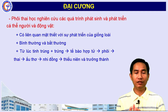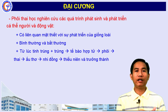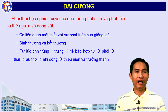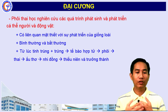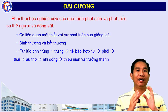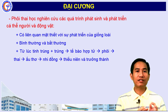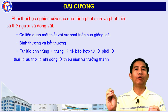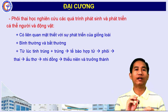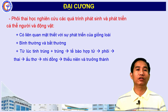Trứng và tinh trùng kết hợp với nhau là hiện tượng thụ tinh. Khi thụ tinh tạo thành hợp tử, hợp tử phát triển thành phôi, phôi phát triển thành thai, đến khi sinh em bé ra rồi em bé tiếp tục phát triển thời thơ ấu, thiếu niên và trưởng thành, đến khi các cơ quan trong cơ thể đạt được mức trưởng thành.